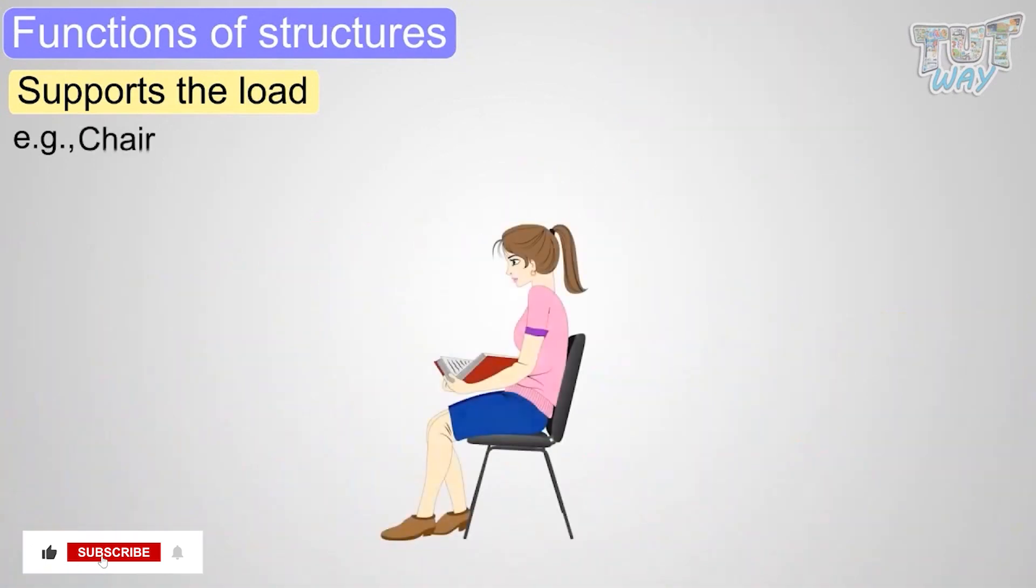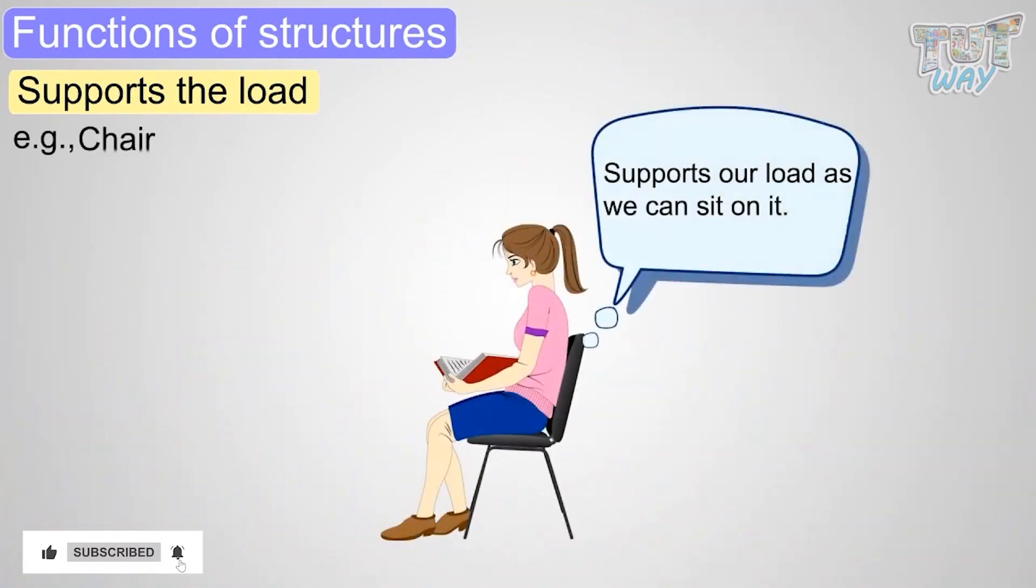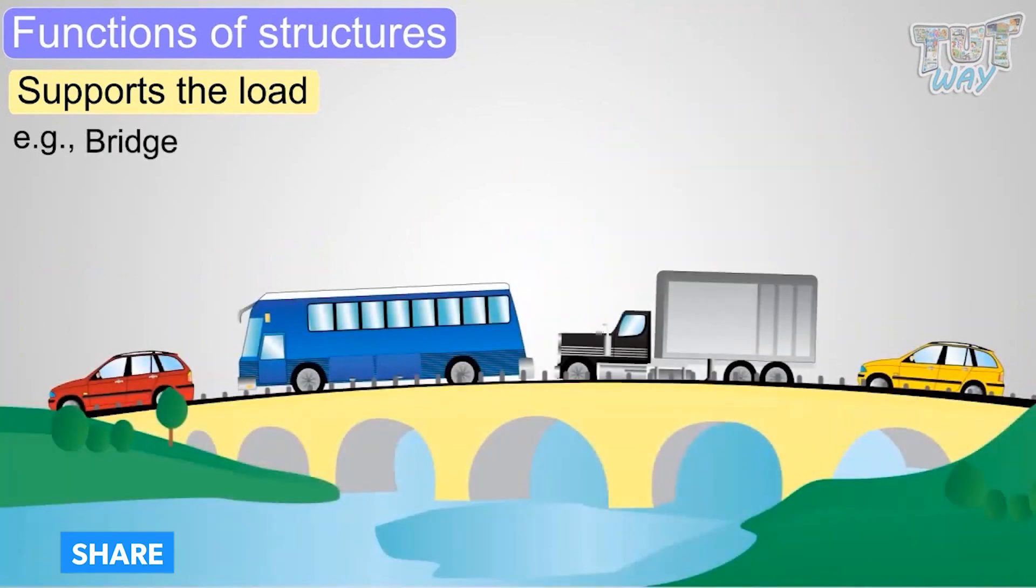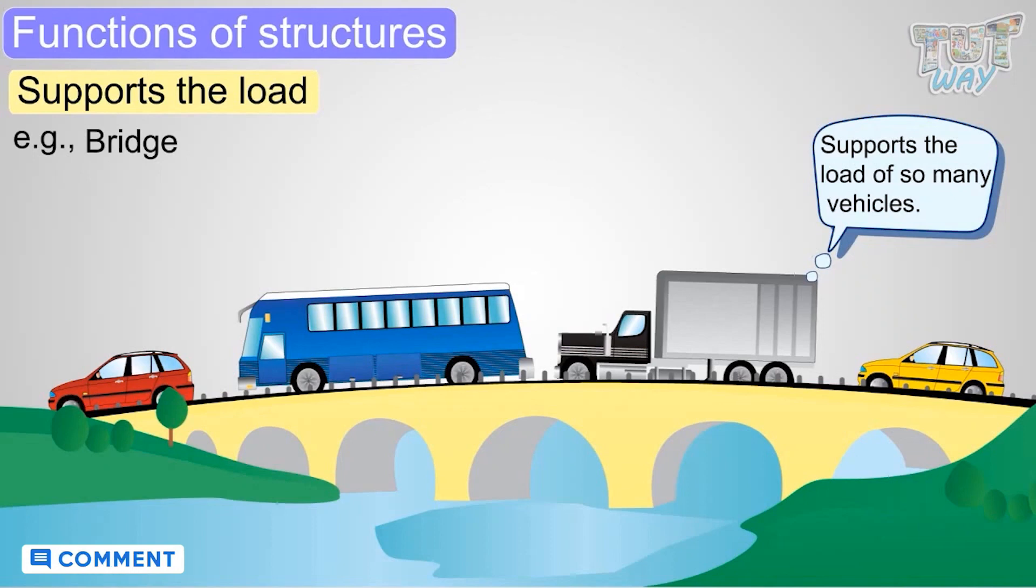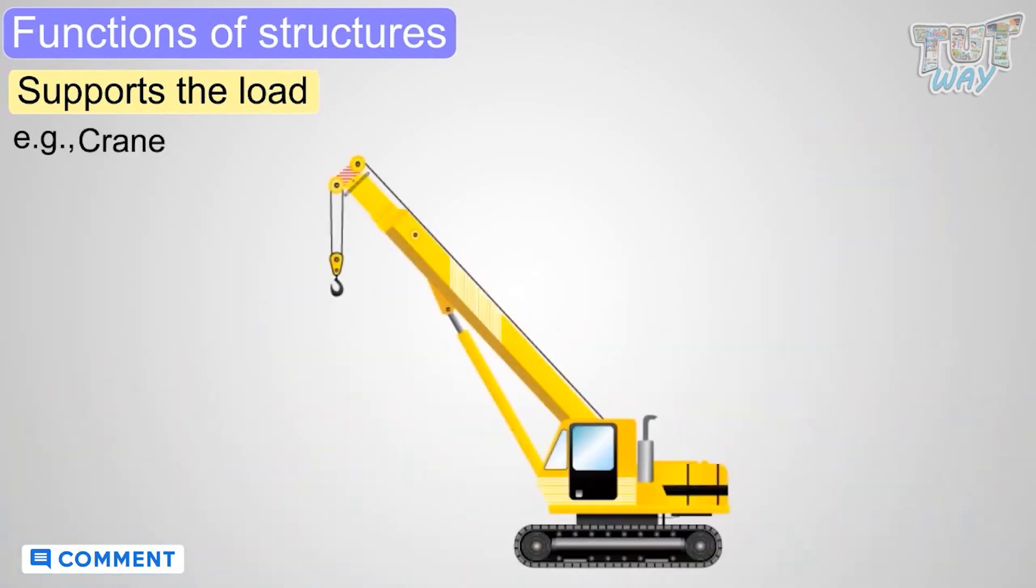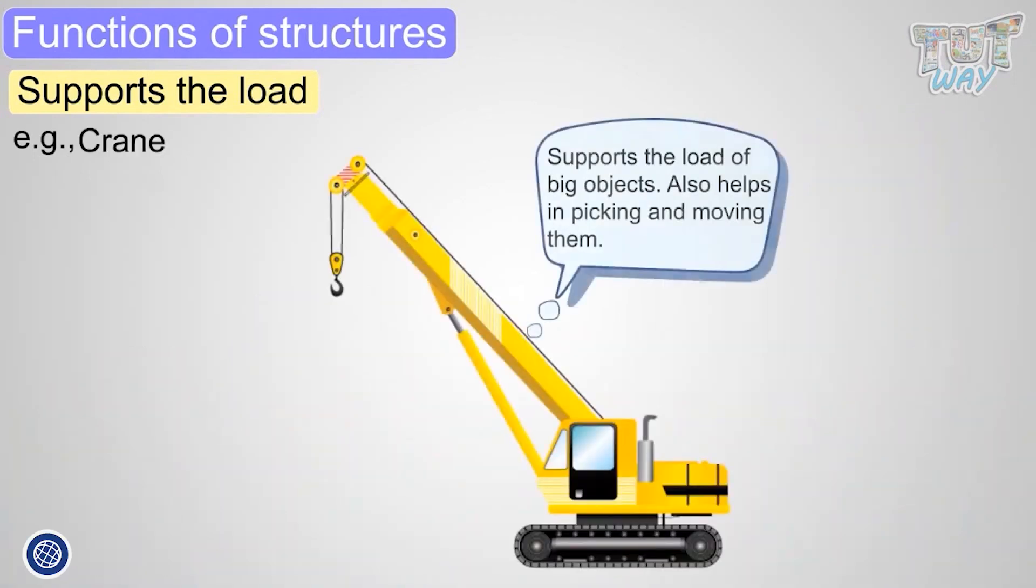Chair is a structure that supports our load as we can sit on it. Bridge is a structure that supports load of so many vehicles. Crane is a structure that supports the load of big objects to pick them up and also move them.